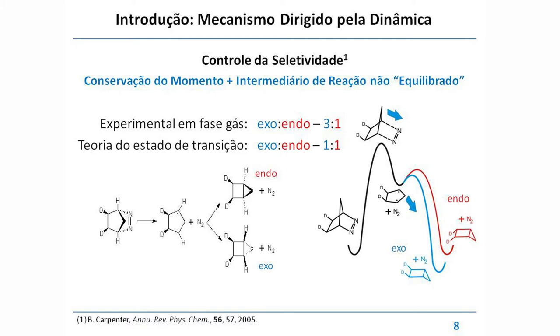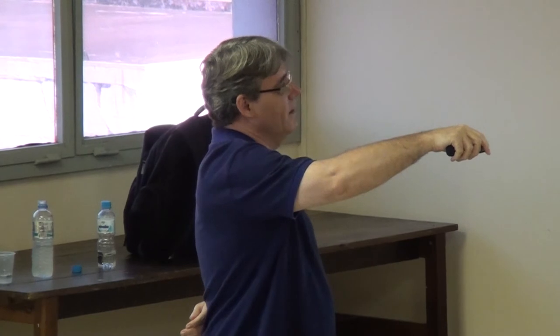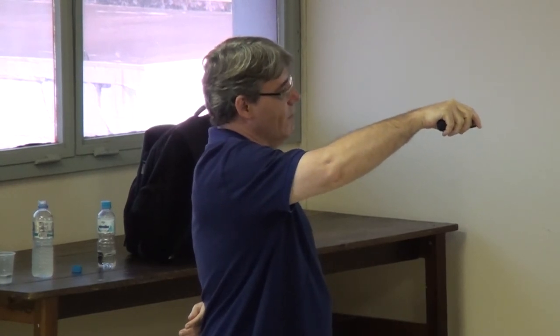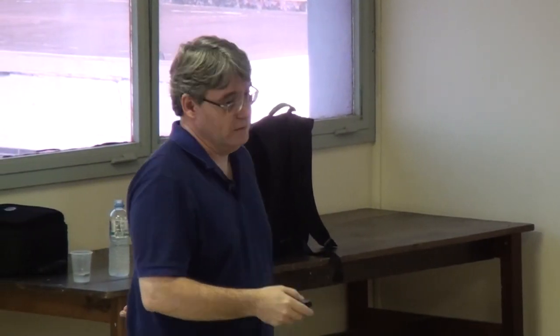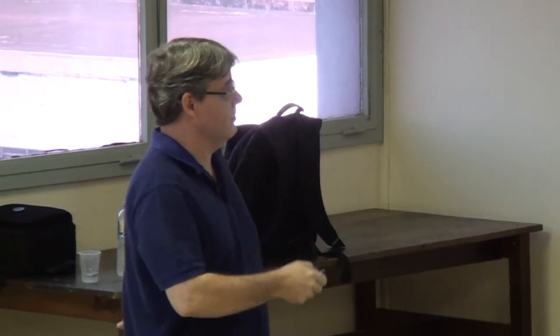A razão é a conservação de momento. Quando o N2 está saindo, para que haja conservação de momento, o bico do anel tem que fazer esse movimento, acompanhar para haver conservação. Então esse grupo CH2 ganha momento e vem para baixo. Dinamicamente, você forma mais o exo do que o endo. Esse é um exemplo em que a conservação de momento é determinante para a seletividade da reação.